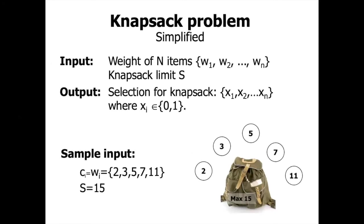Let's see an example — this is a knapsack problem, and it is simplified. In this example we don't have separate cost and weight values as usual. Generally, the knapsack has weight and cost. We give the weights as 2, 3, 5, 7, 1. This is the input and we give the knapsack limit.